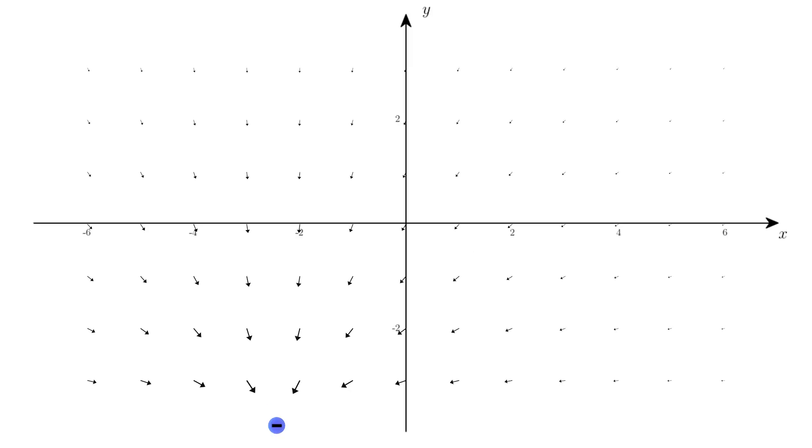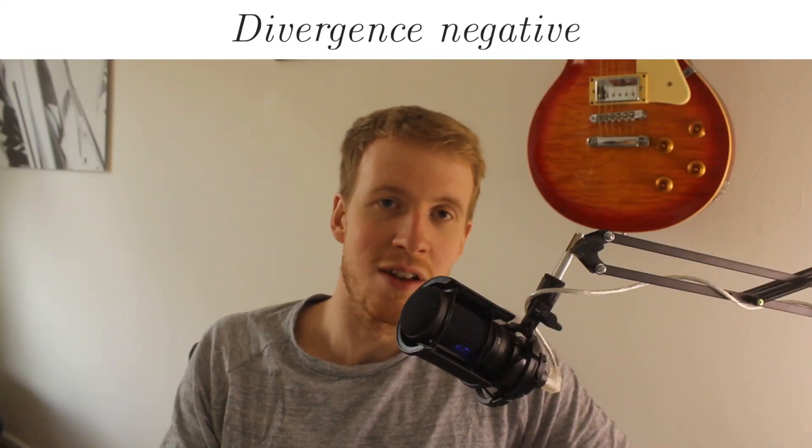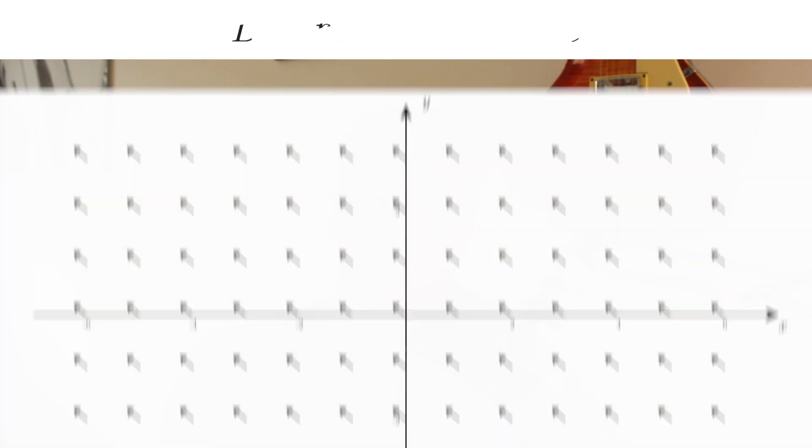Or in this example, we have a negatively charged particle, and around the same region, the vectors will point inwards as if this particle was a sink. And so we say the divergence around this field here is negative.